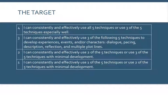For the proficiency level, you'll be able to consistently and effectively use three of the five techniques to help develop the experiences, events, and characters of your story. Those five techniques are: dialogue, pacing, description, reflection, and multiple plot lines.